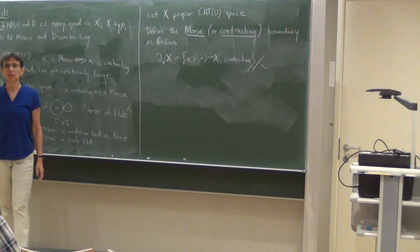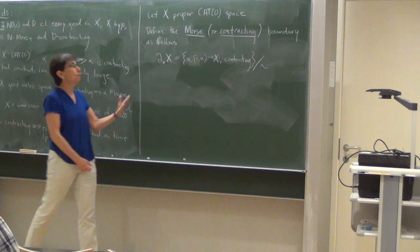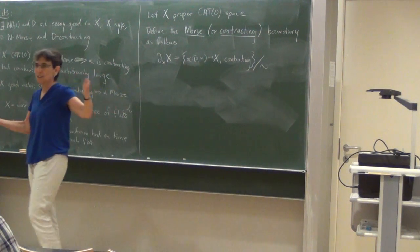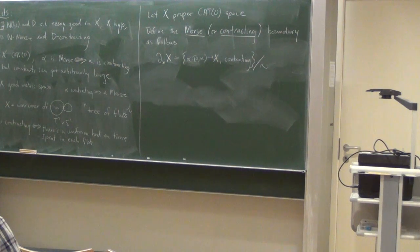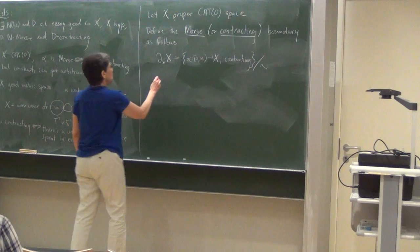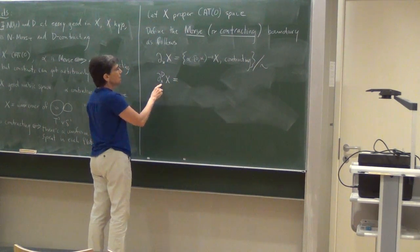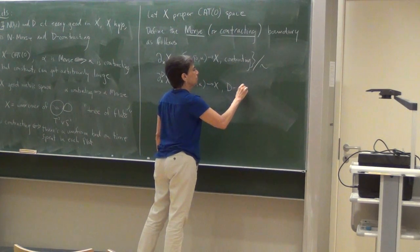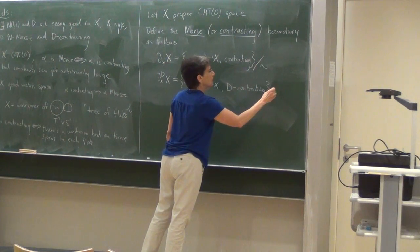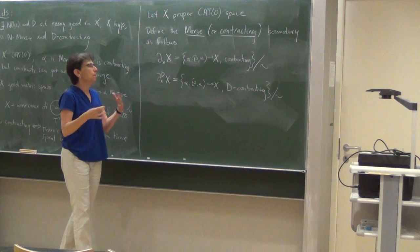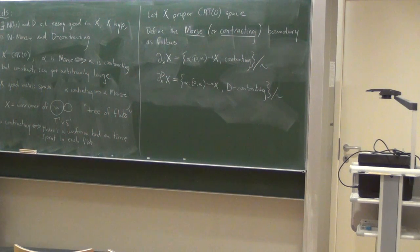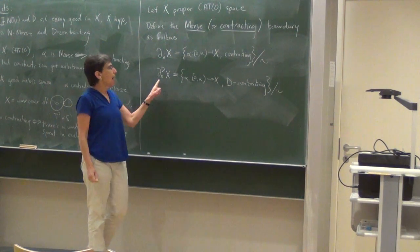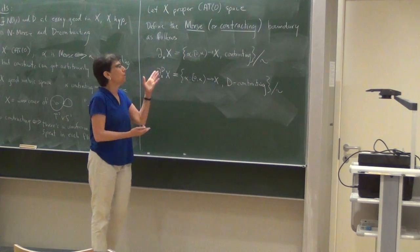So that's what it is as a set, but we're going to put maybe not the topology one might expect. One topology, as a set, this is contained in the visual boundary. It's just a subset of the visual boundary, and we could, of course, put the subspace topology on. I'm not going to, and I will explain later why I'm not going to. So let me tell you what topology I am going to put on it. First of all, I'm going to look at certain subsets of this. Namely, I'm going to look at the ones where I limit to d, the contracting constant. For here, you have to be a little careful. A representative, which has a representative which is d-contracting, or you can fix a base point. There's various ways to do this. But anyway, we're going to limit the contracting constant and look at those. And I am going to take the subspace topology on this.